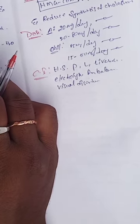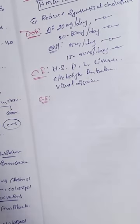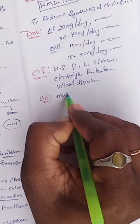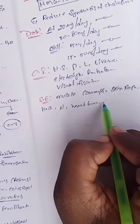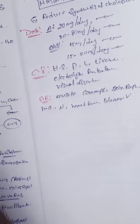What are the side effects of this drug? Side effects include muscle cramps, skin rash, headache, nausea, heartburn, and blurred vision.